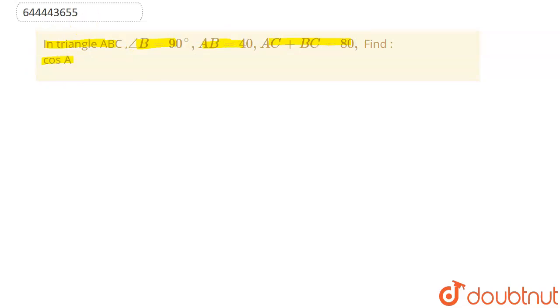So we will draw the triangle first of all. The given triangle is like this, here angle B equal to 90 degrees. Let us name this as A and this as C.